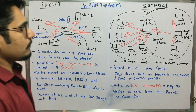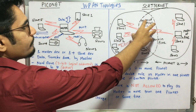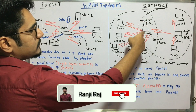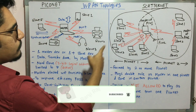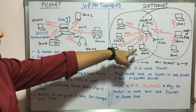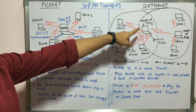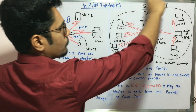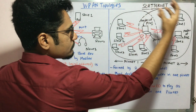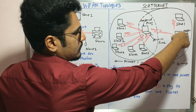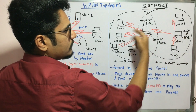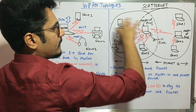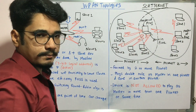Consider Piconet one: you have one master, and this master is connected to n number of slaves — five slaves in this example. Whereas in Piconet two, the master here is a different device, connected to its own slaves. So in one scenario a particular device becomes a slave, but in another scenario that same device becomes a master.